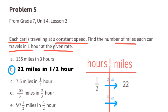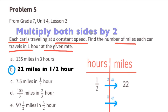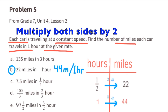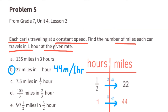The given rate for B is 22 miles in half an hour. Multiplying the half hour by 2 gives 1 hour, and multiplying 22 miles by 2 gives 44 miles. Car B is traveling 44 miles in 1 hour.